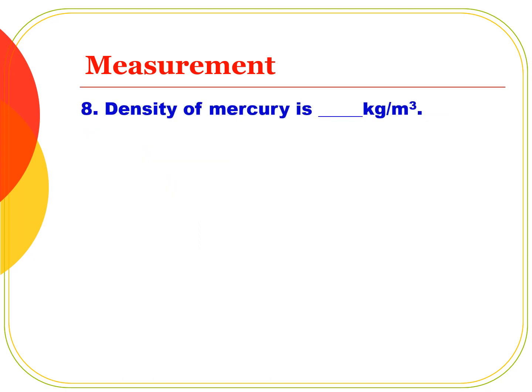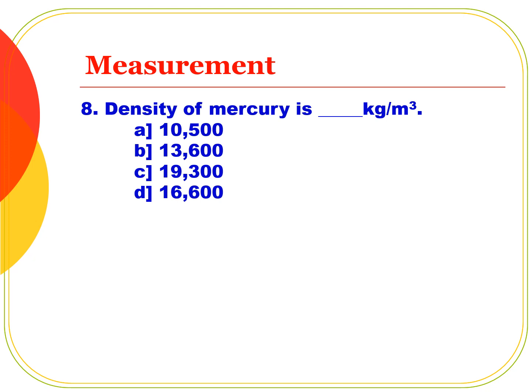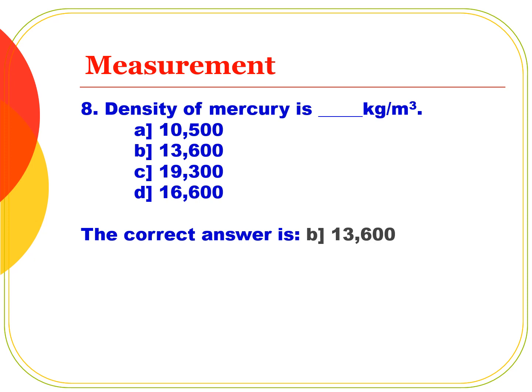Density of mercury is how many kilograms per cubic meter? Mercury is a liquid metal. Option A: 10,500. Option B: 13,600. Option C: 19,300. Option D: 16,600. The density of mercury is 13,600 kg/m³. The correct answer is Option B, 13,600.